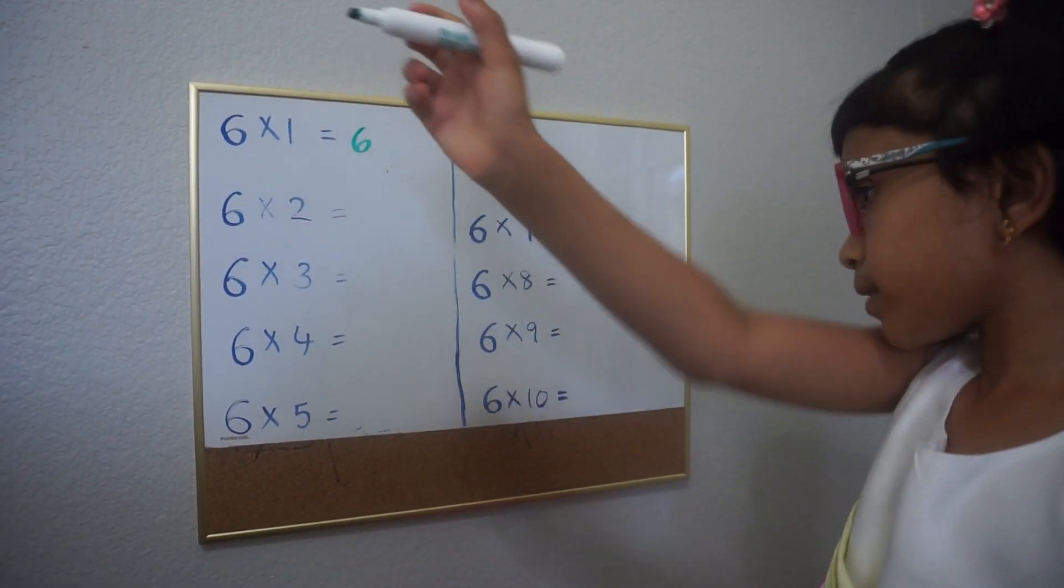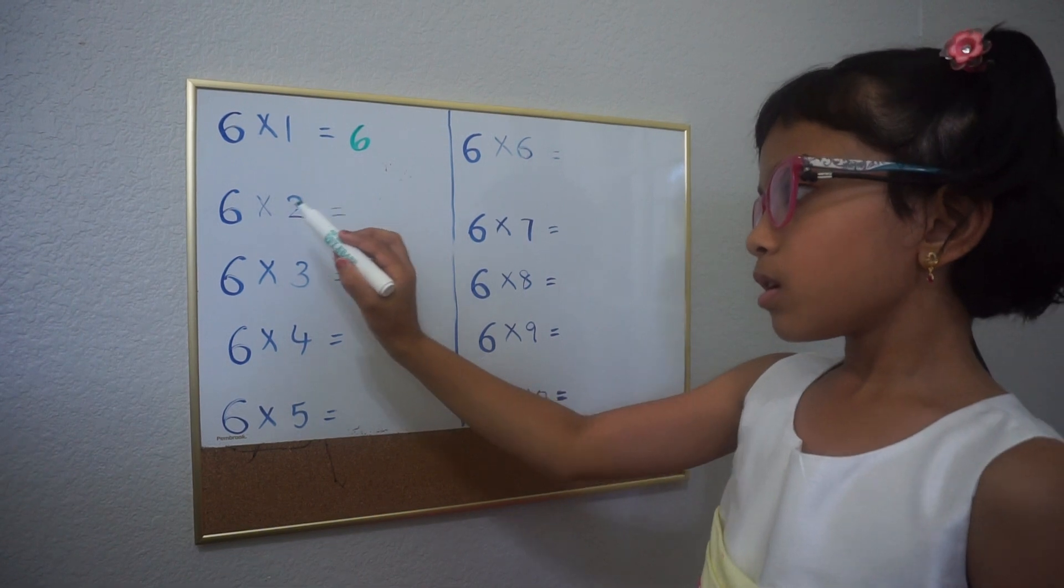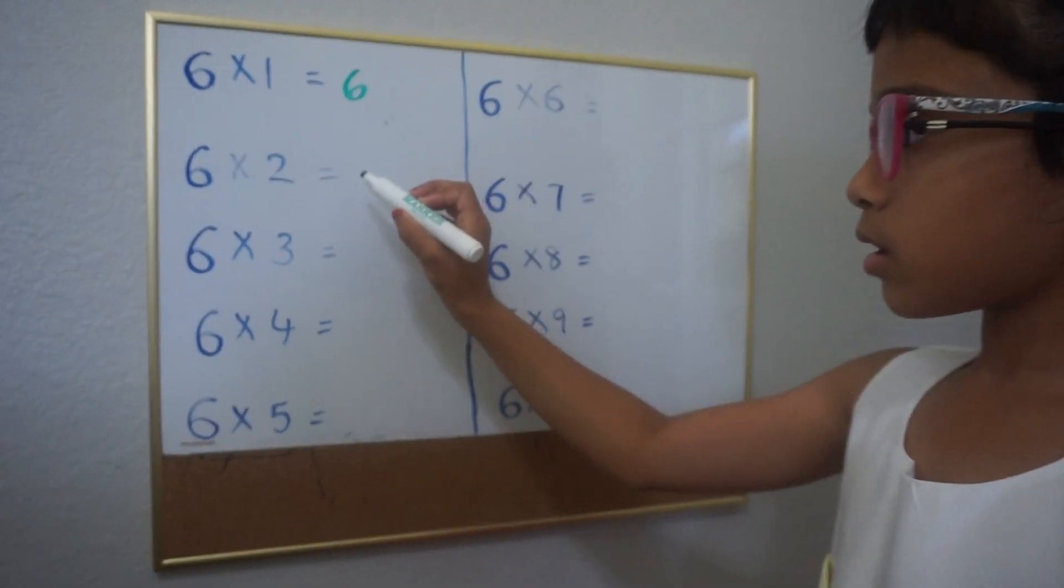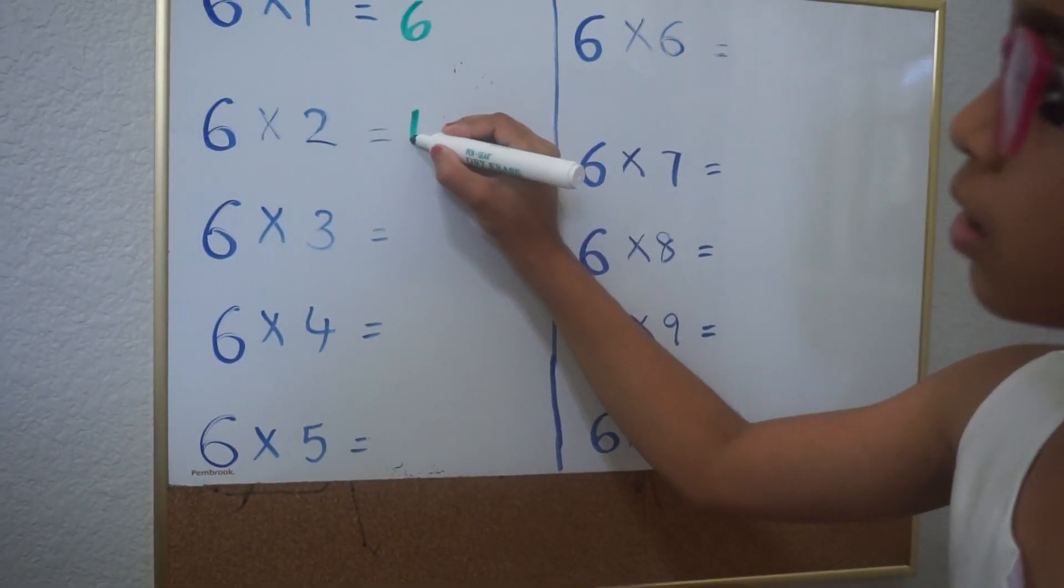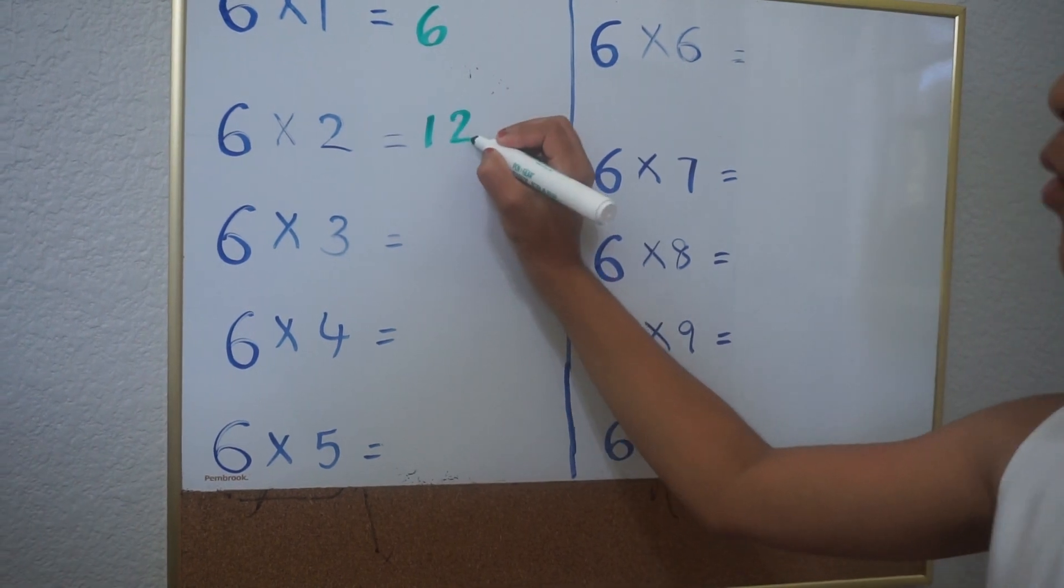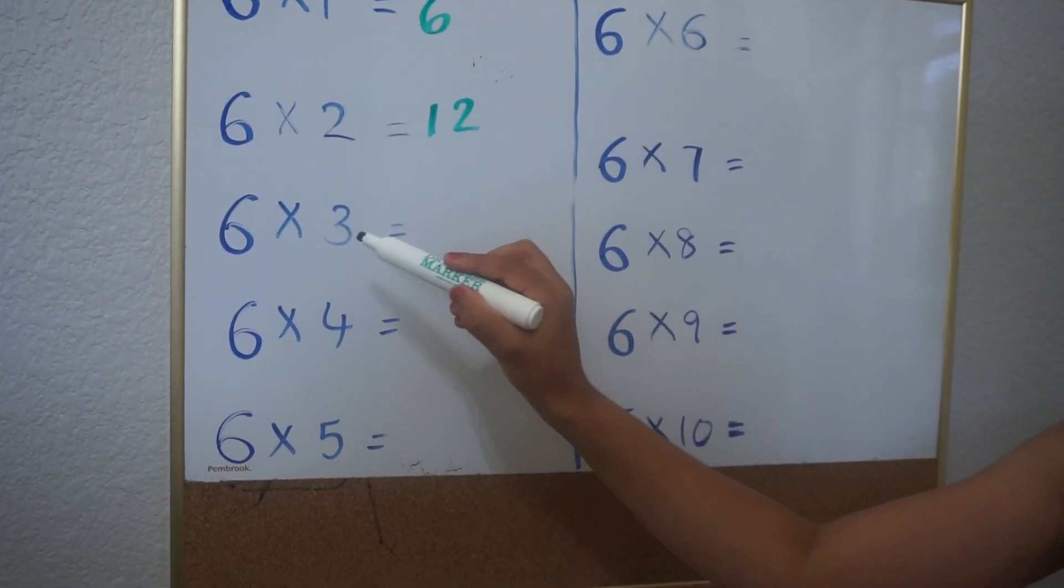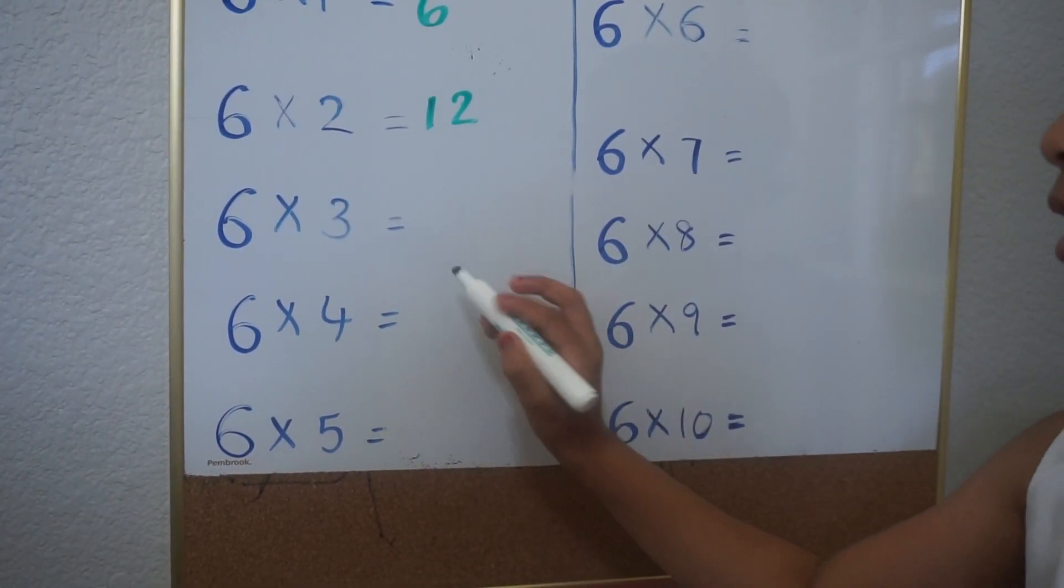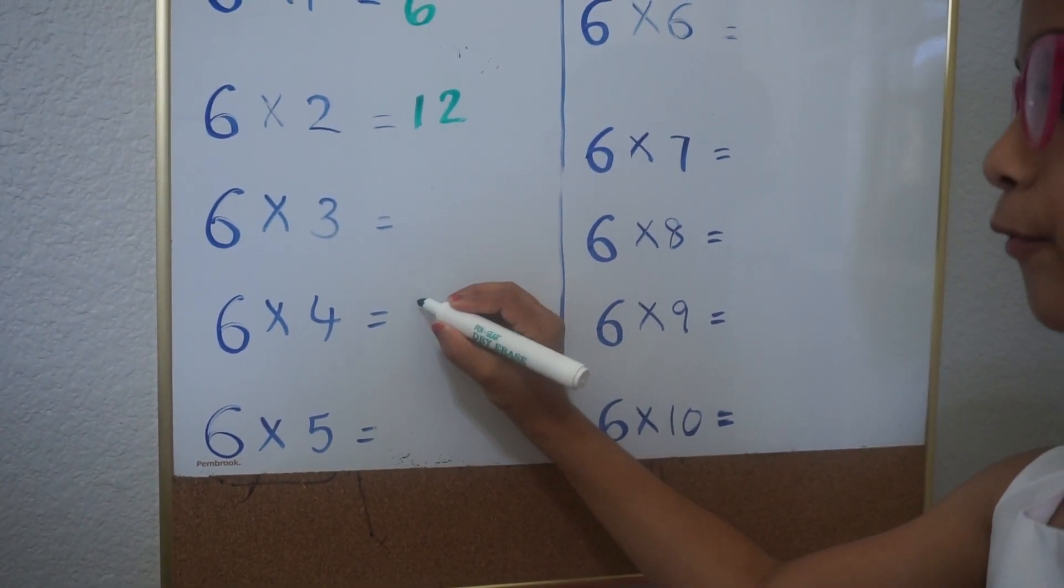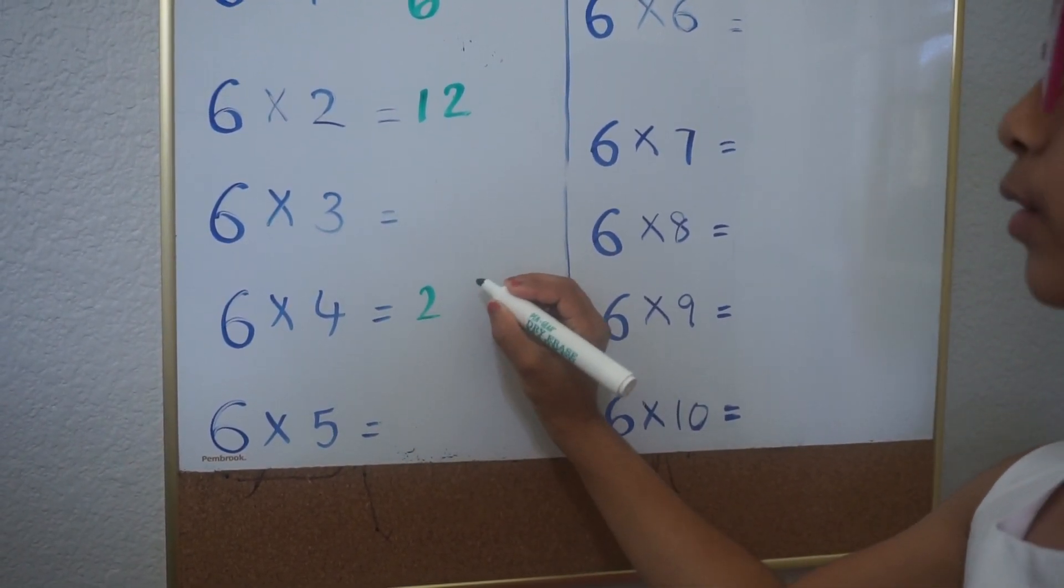Then 6 times 2. You take half of 2, that's 1, and you carry the 2 and put it over there. This trick doesn't work for odd numbers, so you skip the 3 and go to 4. Half of 4 is 2, and then you carry the 4 here.